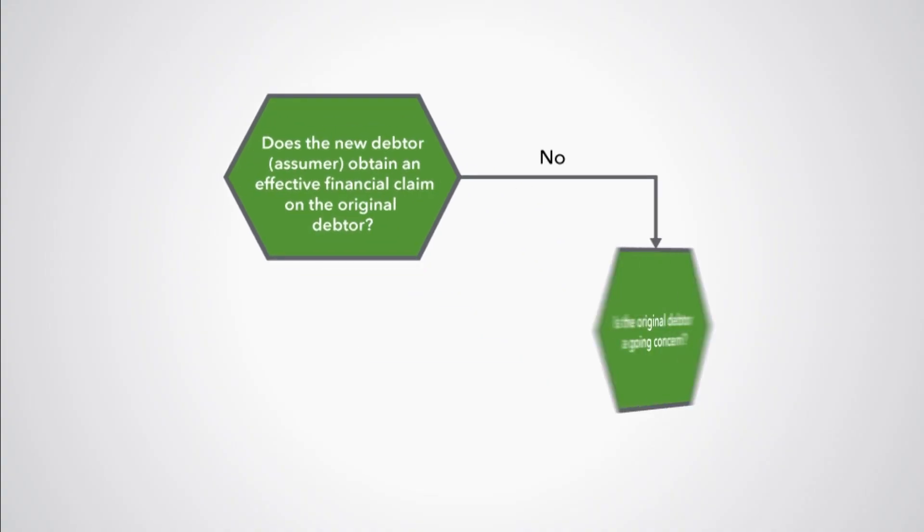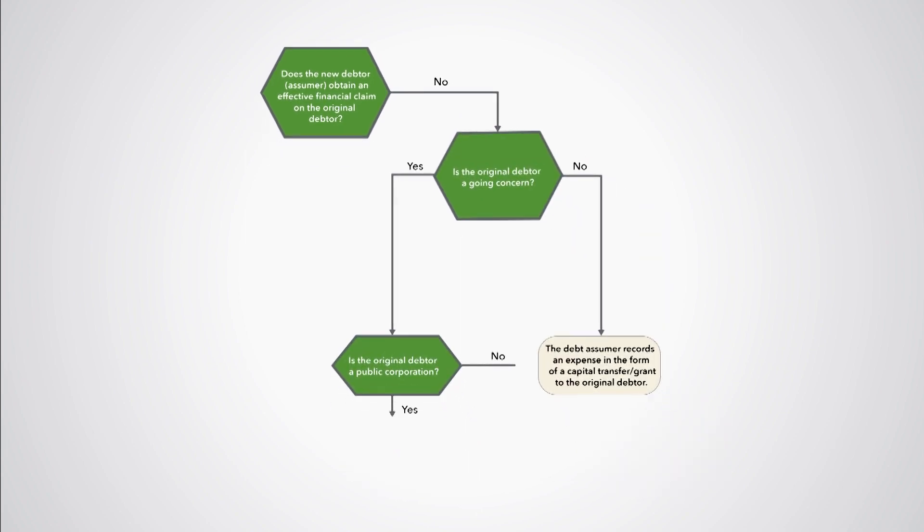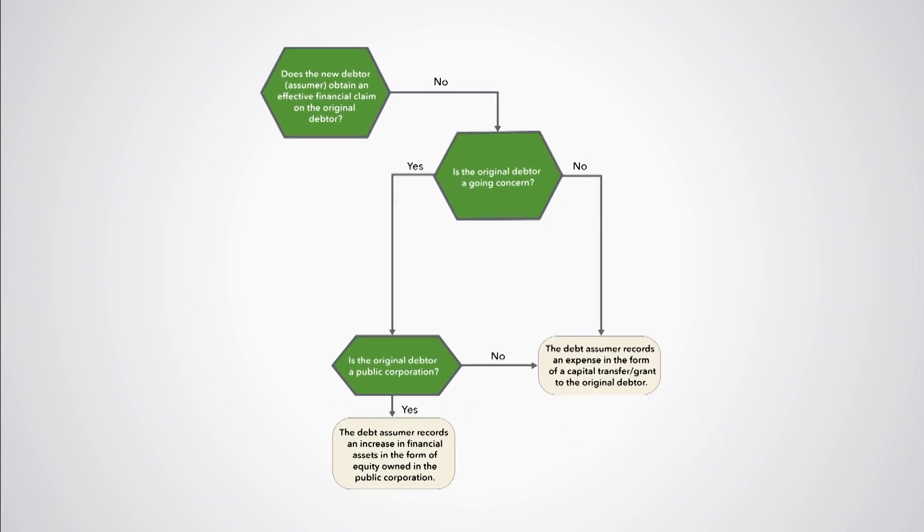If the answer is no, then it records an expense in the form of a capital transfer, which we classify according to the nature of the debtor. The counterpart entry is a decrease in financial assets in the form of currency and deposits. At the same time, the state-owned enterprise records a revenue in the form of a capital transfer and a decrease in its original debt liability to the local bank.